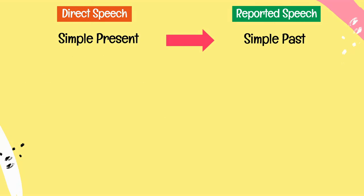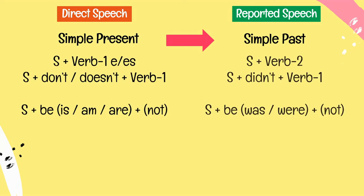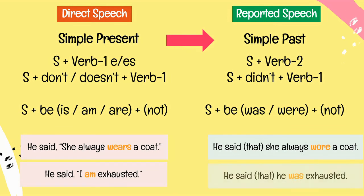Look at the patterns of simple present and simple past. Example: he said 'She always wears a coat' becomes he said that she always wore a coat. He said 'I am exhausted' becomes he said that he was exhausted.